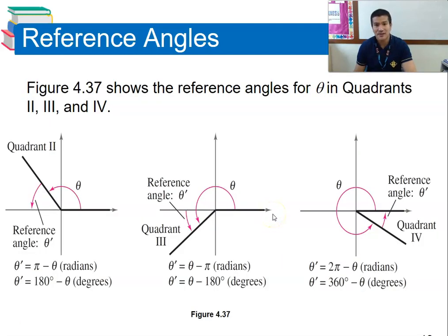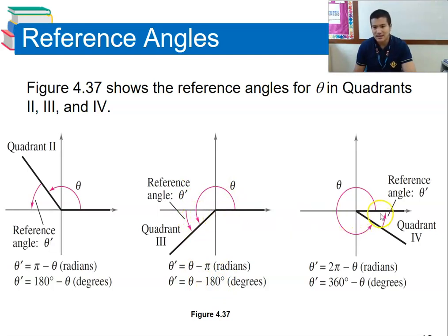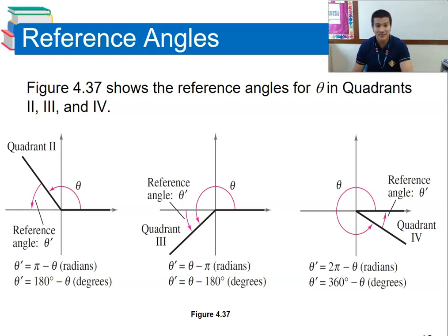Here are the reference angle formulas by quadrant. In quadrant two (between 90° and 180°), use: θ′ = 180° − θ. In quadrant three (between 180° and 270°), use: θ′ = θ − 180°. In quadrant four (between 270° and 360°), use: θ′ = 360° − θ. The resulting reference angle will always be one of the special angles: 30°, 60°, or 45°.